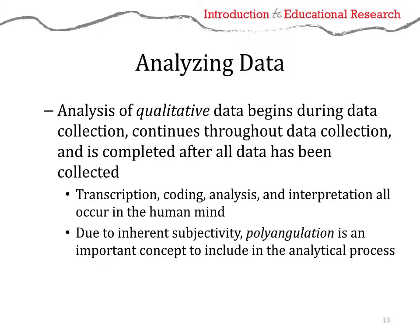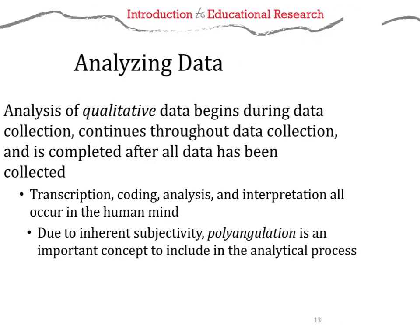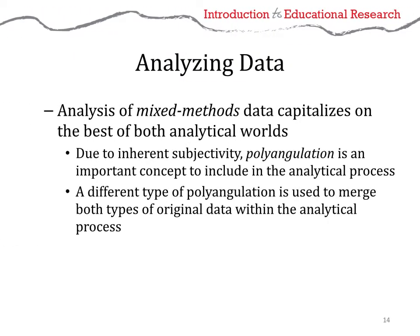This concept of triangulation — coming at things from different angles — means you can have multiple sources. With mixed methods, people talk about it as a best-of-both-worlds approach, and you can use a triangulation approach to get at different aspects of your research question — multiple angles, multiple perspectives.